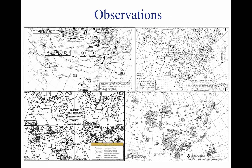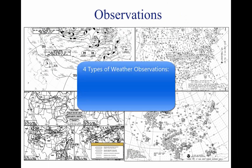There are four types of weather observations: surface, upper air, radar, and satellite.